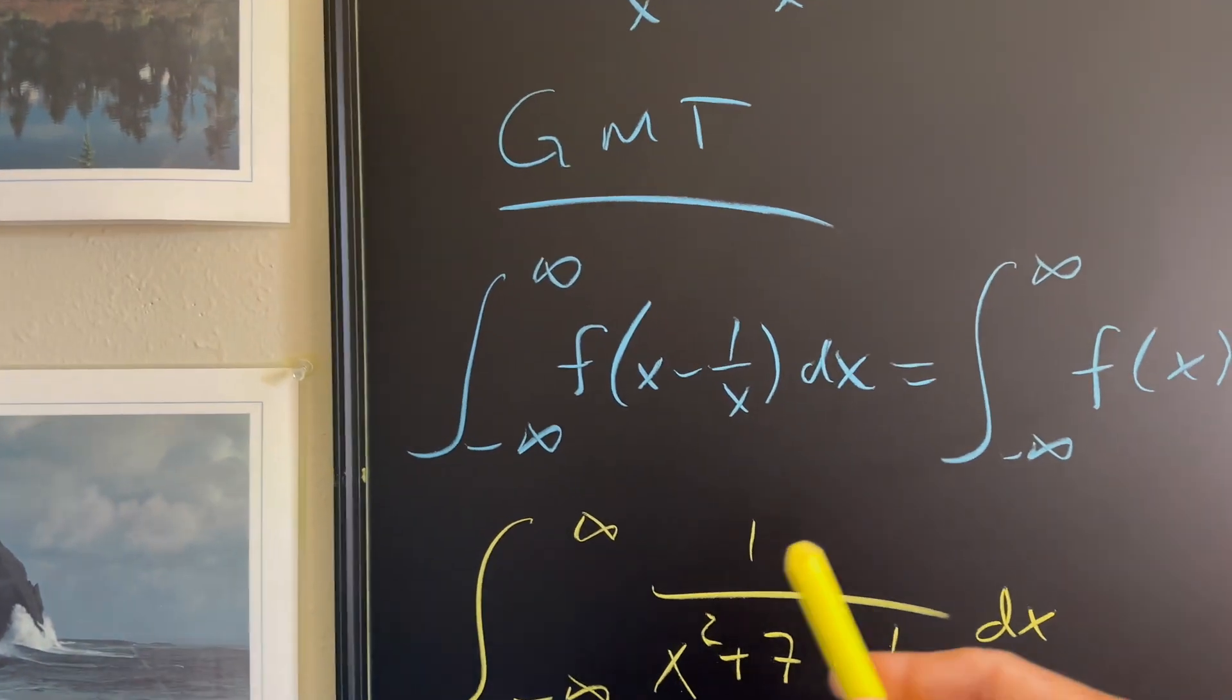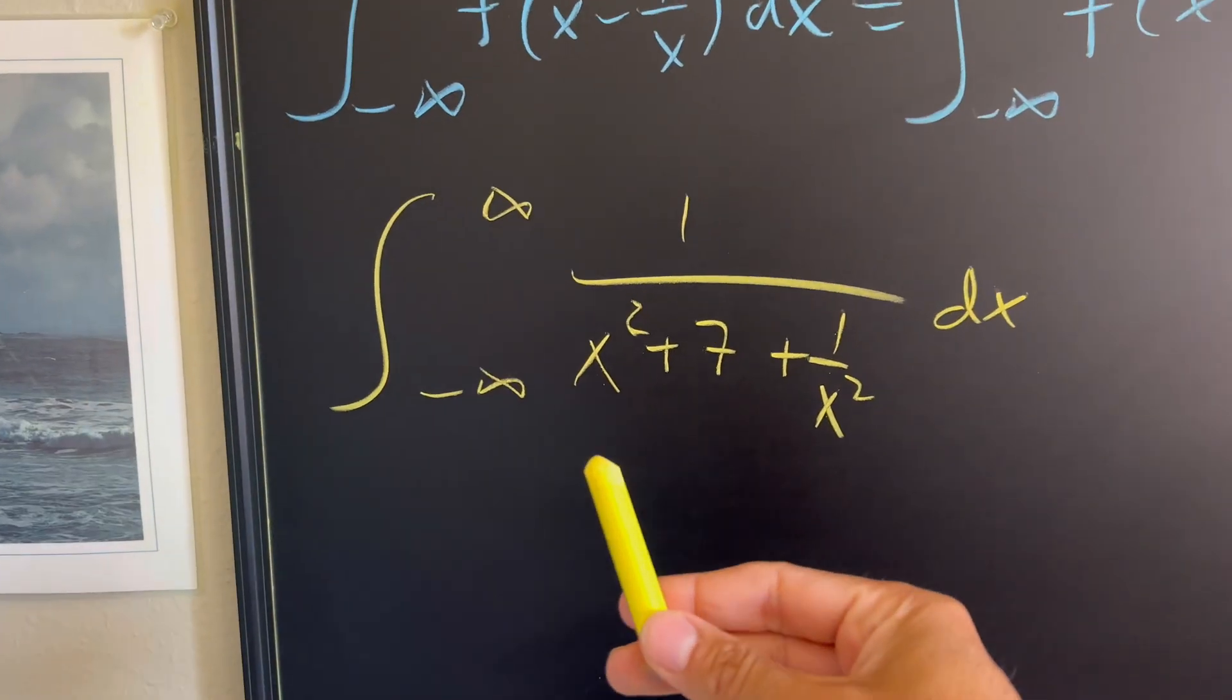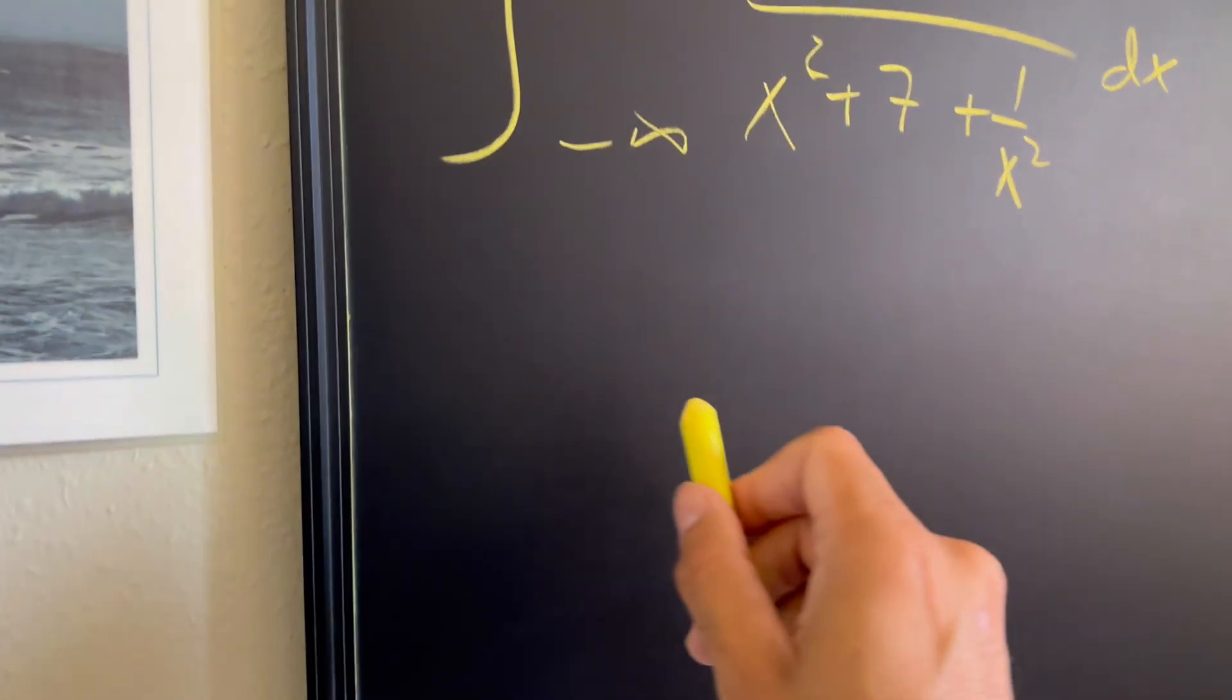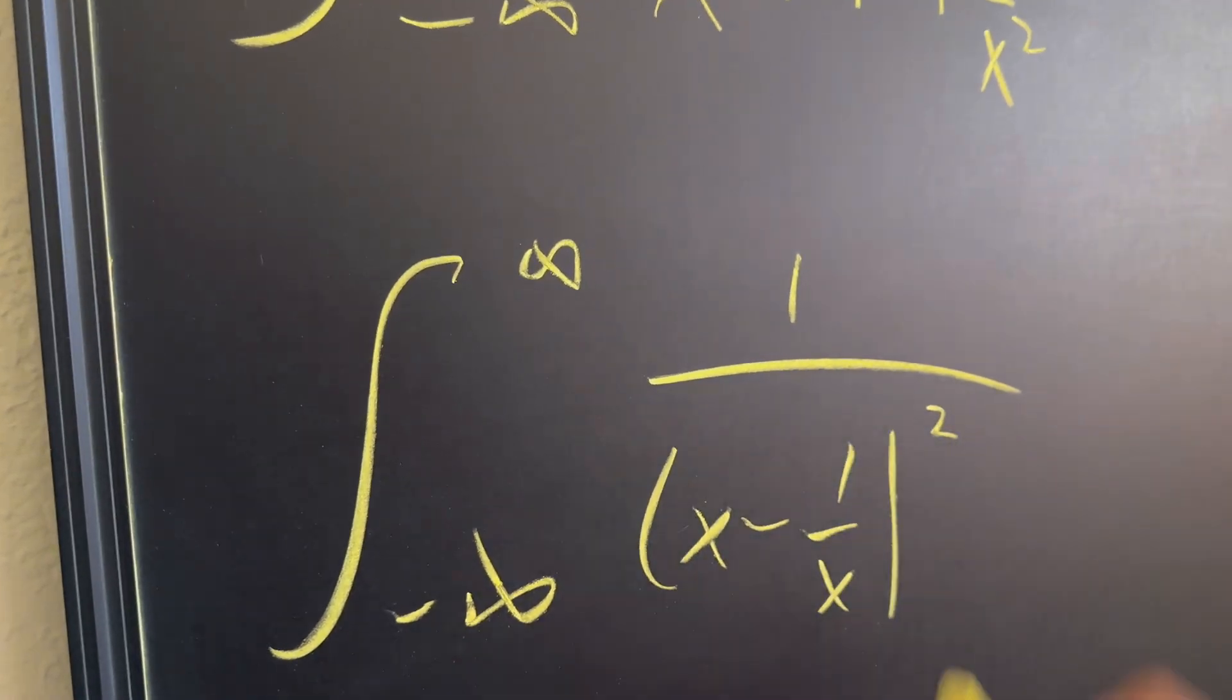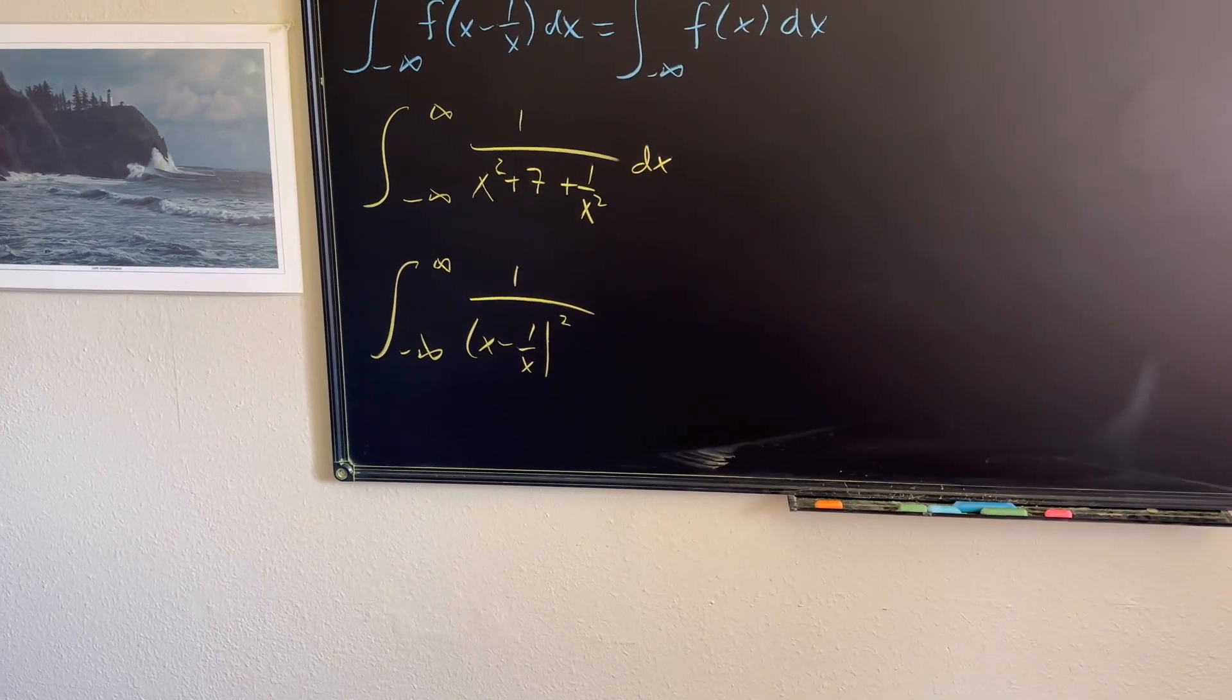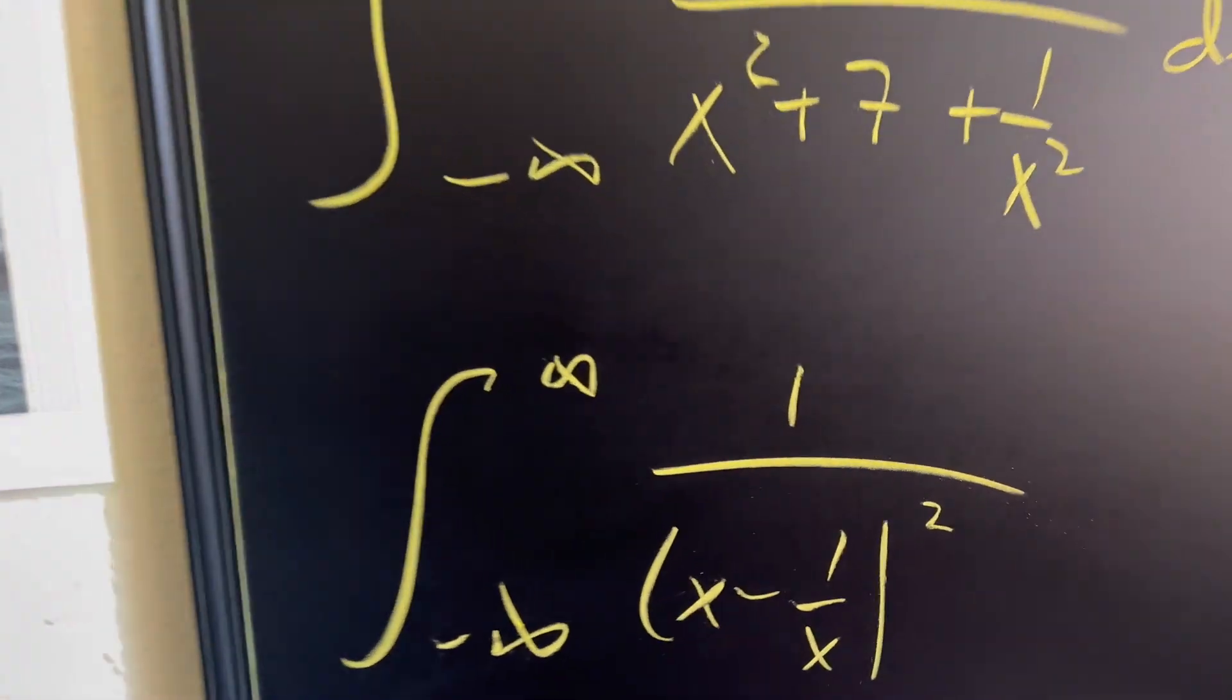Now, how do we get to turn this into x minus one over x? Well, we sort of have this right here. We have the x squared, and we have the one over x squared. So let's just kind of focus on the bottom here. What would happen if I rewrite this as x minus one over x squared? That's kind of the objective that I want. I want it to have an x minus one over x squared. So let's just sort of simplify this out by foiling.